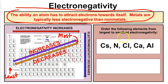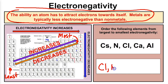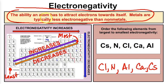To order the same five elements from largest to smallest electronegativity: chlorine is the smallest atom so it's going to have the highest electronegativity, followed by nitrogen, then aluminum, then calcium, and finally cesium as our least electronegative atom. Fluorine is the most electronegative element on the periodic table — it attracts all those electrons toward itself — and francium is one of the least electronegative.